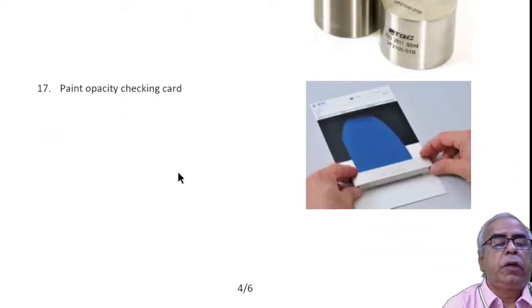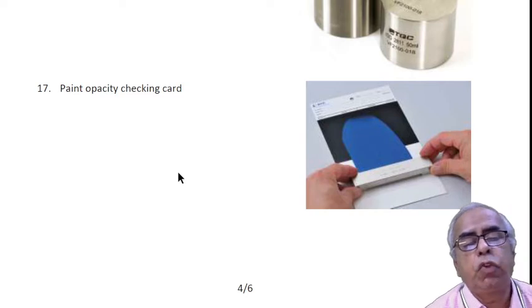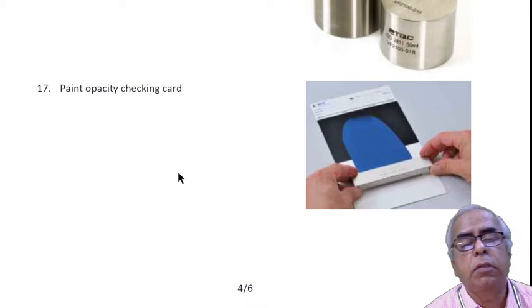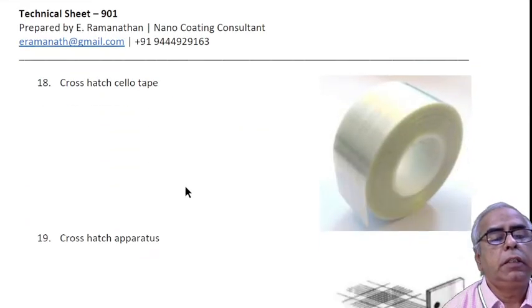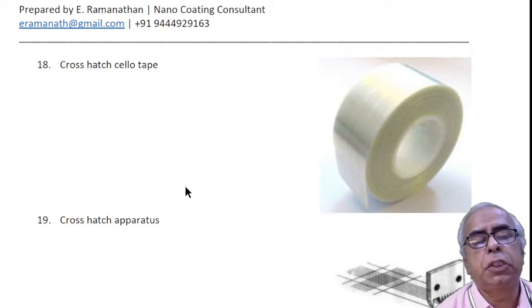We can make use of this paint opacity checking card. With the help of this, we can have some rough idea about the pigmentation and coverage of the paint.